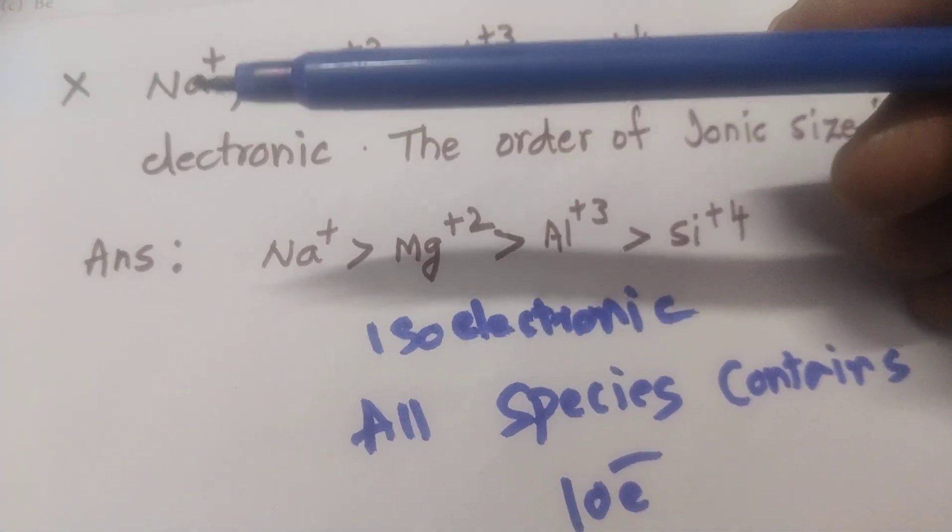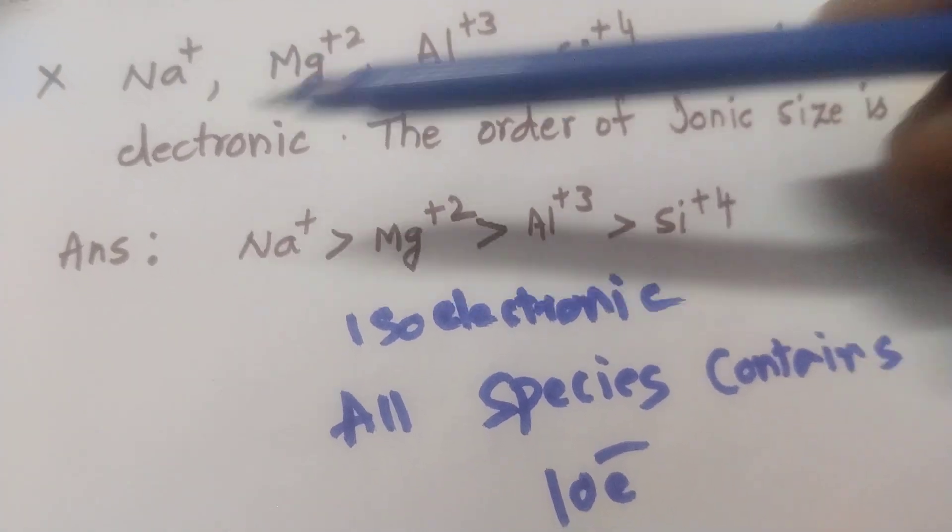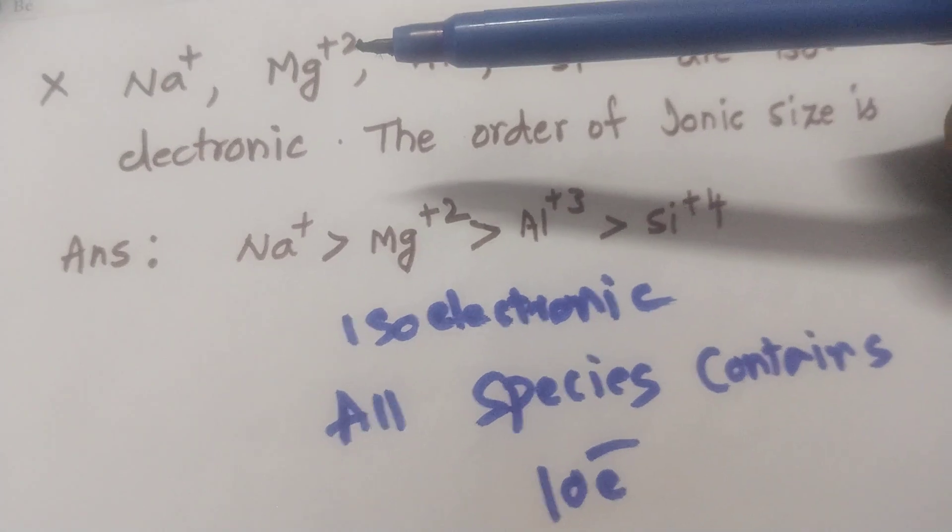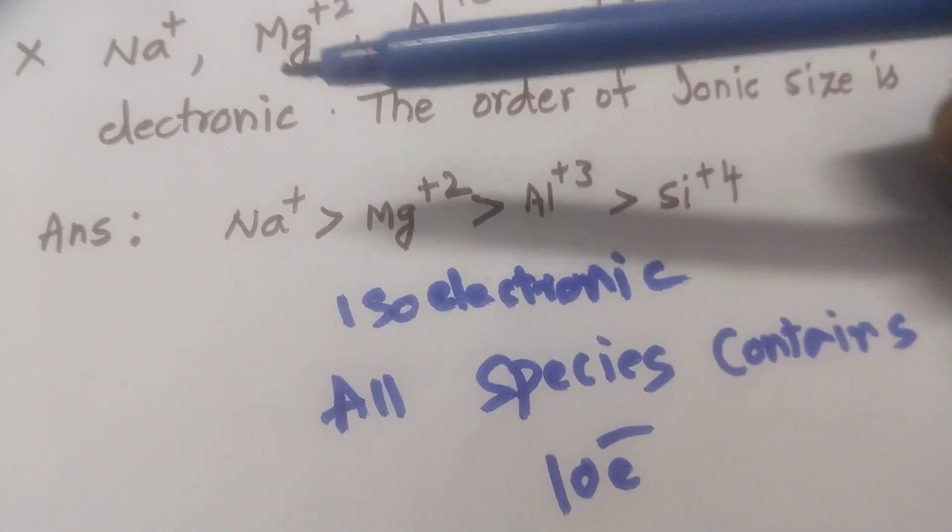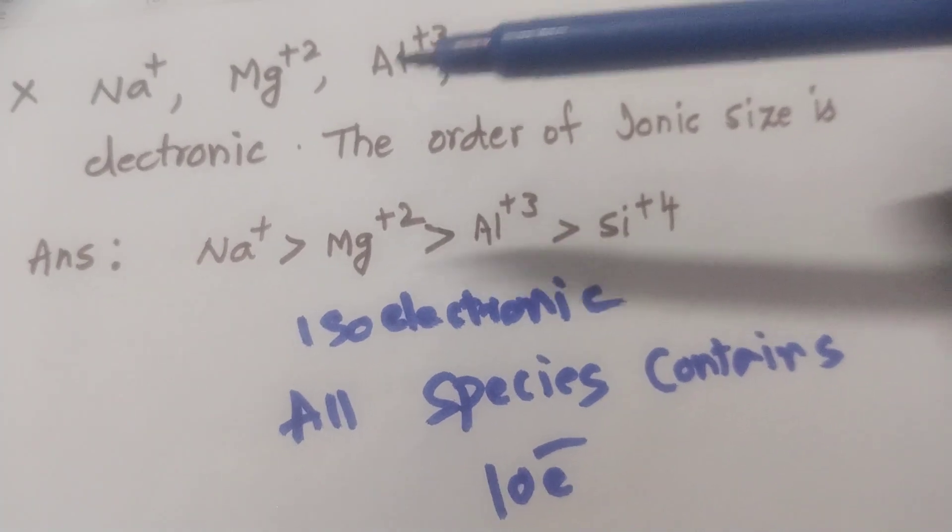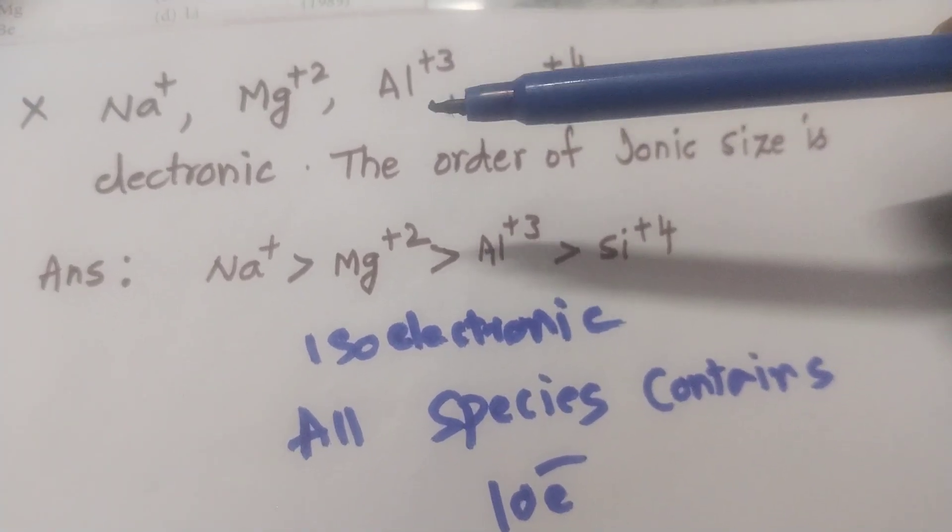Na atomic number 11 loses 1 electron, converted to Na+, so number of electrons 10. Magnesium atomic number 12 loses 2 electrons, converted to Mg+2, number of electrons 10. Aluminum atomic number 13 loses 3 electrons, converted to Al+3, number of electrons 10.